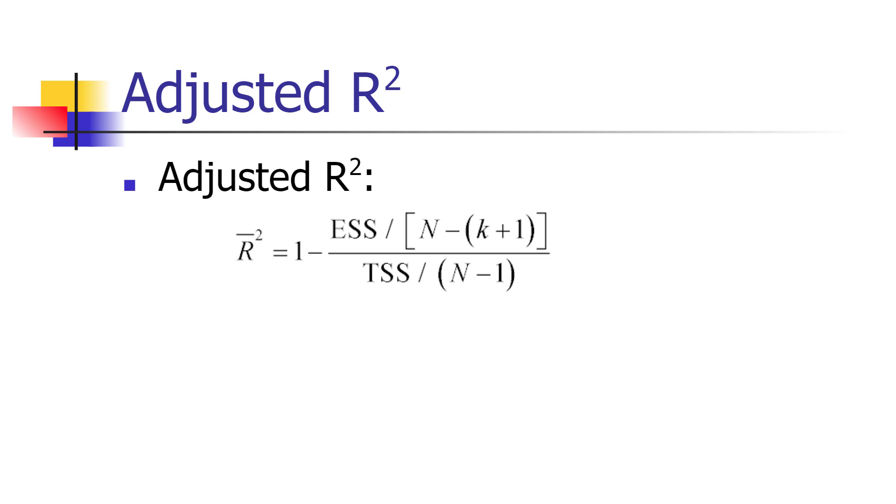And when we take 1 minus that, it means that R-squared is going to be reduced as the number of variables in the regression rises. So essentially what this adjustment does is it adds a penalty for including additional variables.